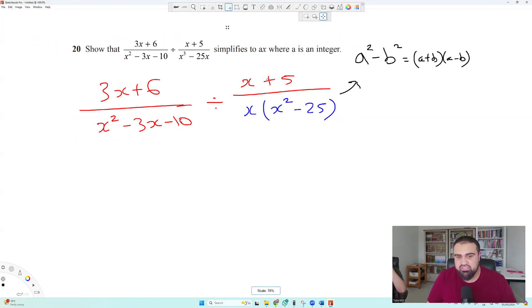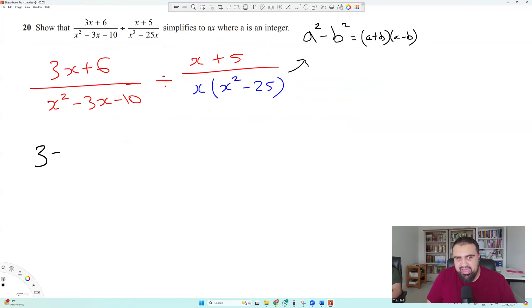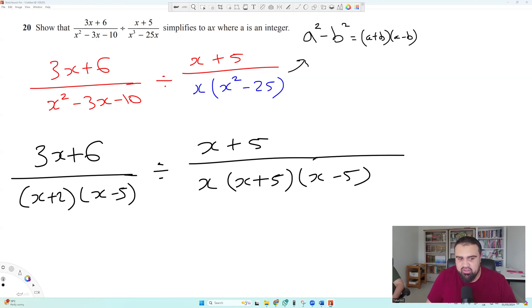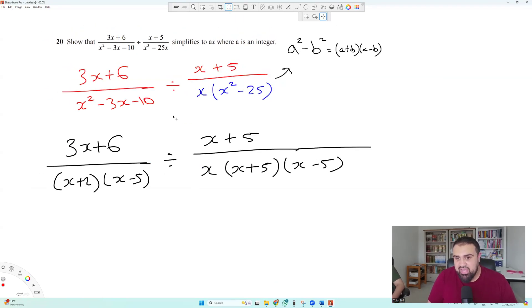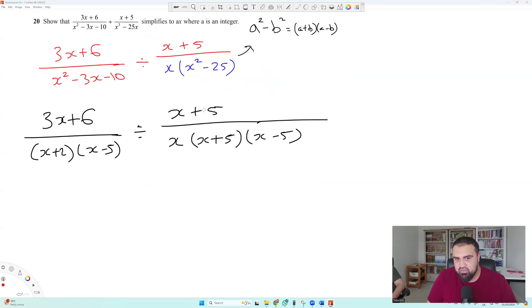So to finish off this question real quick, you've got 3x plus 6 over x plus 2, x minus 5. I've quickly just factorized that. Divide x plus 5 over, check this out, over x multiplied by x plus 5, x minus 5. Now, what can we do next, Kuali? So we can keep change flip. Not yet. I wouldn't do it so quick. Because what can you see? We can cancel out. So how many x plus 5's going to x plus 5? 1. So that cancels out to 1.